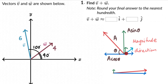We'll use the strategy of resolving vectors into their components, adding their corresponding i-cap and j-cap components, then figuring out the final magnitude and its angle with the positive x-axis. Now let's look at v and w independently and resolve them into their components.